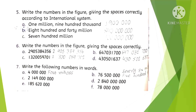Question 5: Write the numbers in figures, giving the space correctly. In the international system we don't write commas — we give a space after every three digits. So we write: one million, nine hundred thousand in this form. Next: eight hundred and forty million — written like this. Seven hundred million — giving the space between three digits, written in this form.